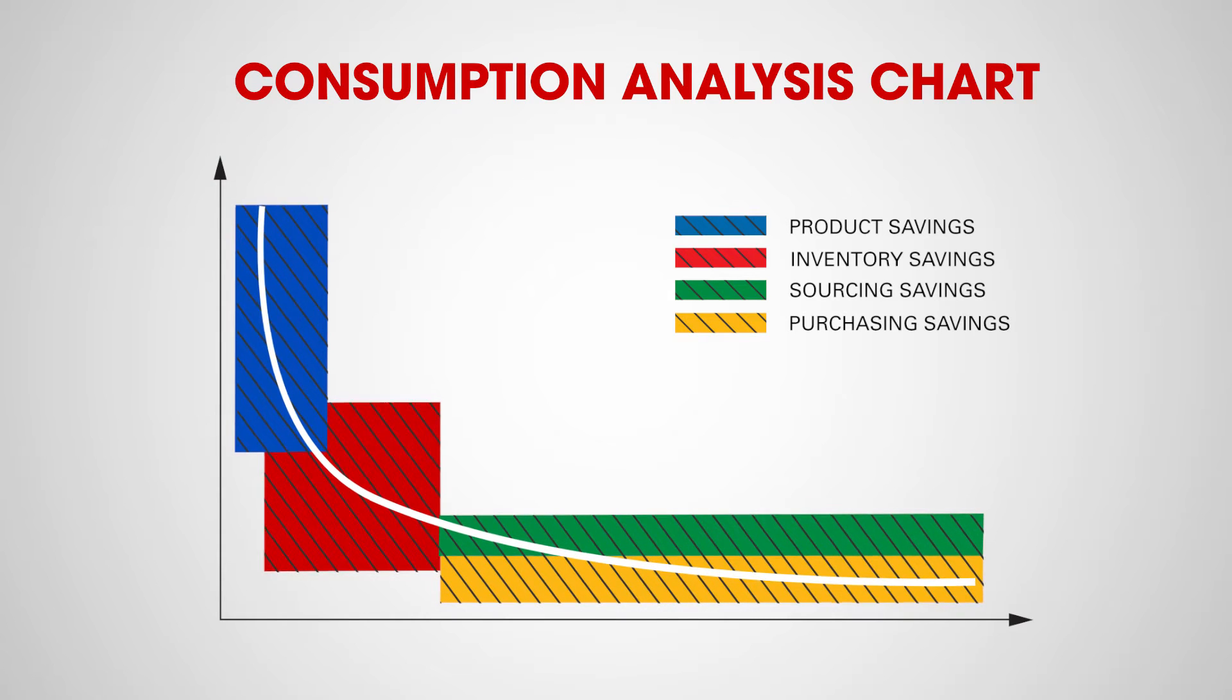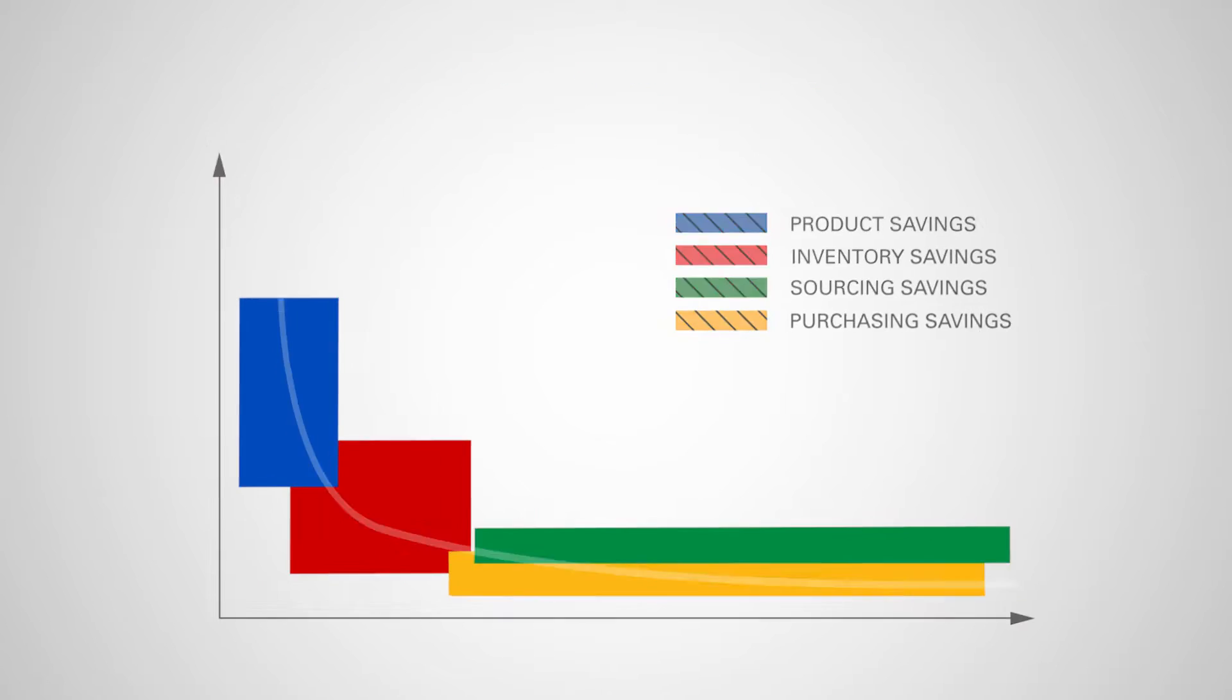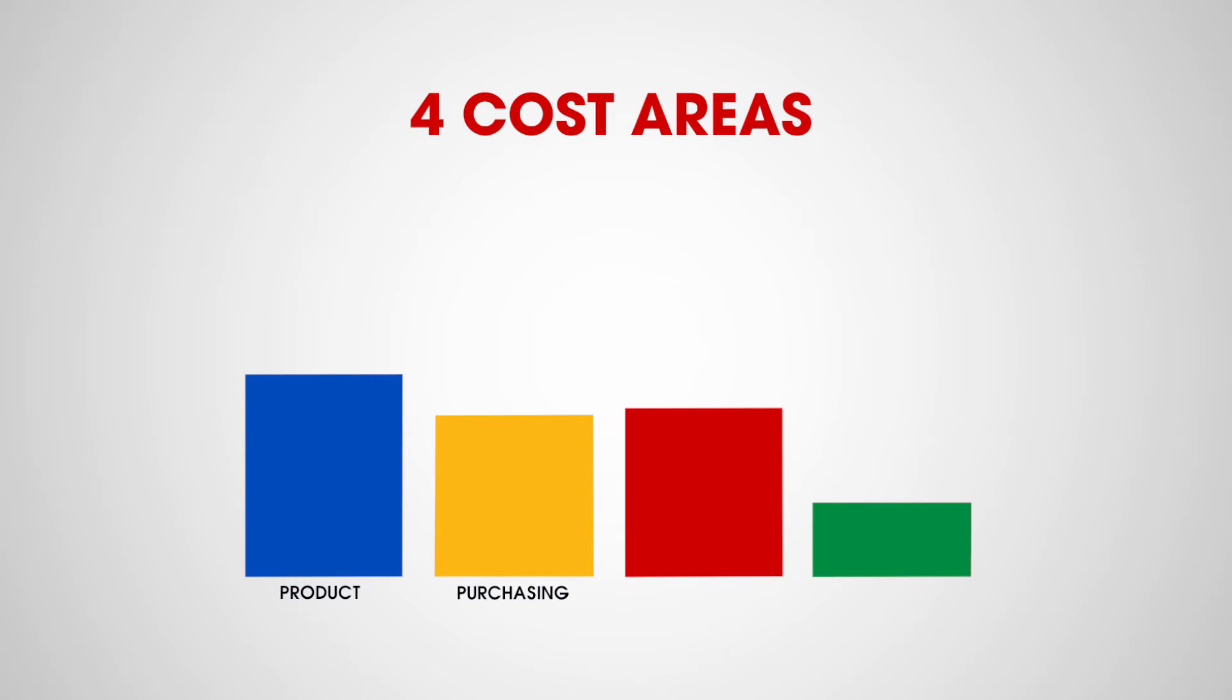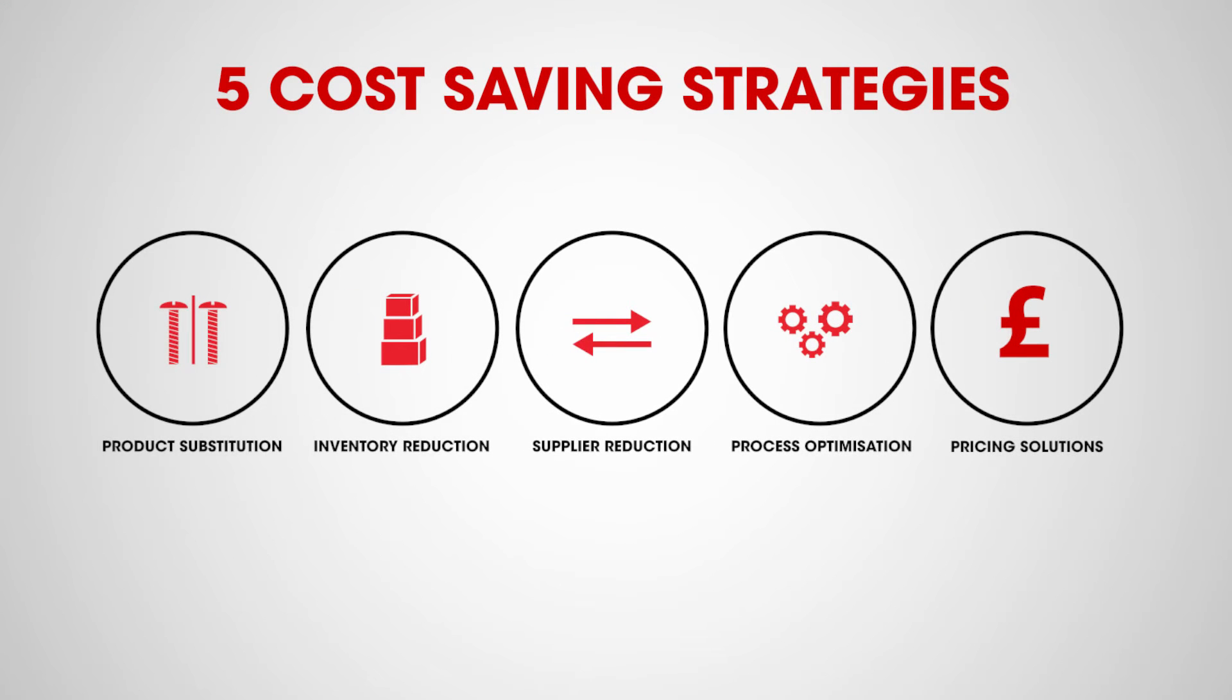Each of the four cost areas—product, purchasing, inventory, and sourcing—can be optimized. By analyzing your consumption behavior, effective cost savings strategies can be applied.